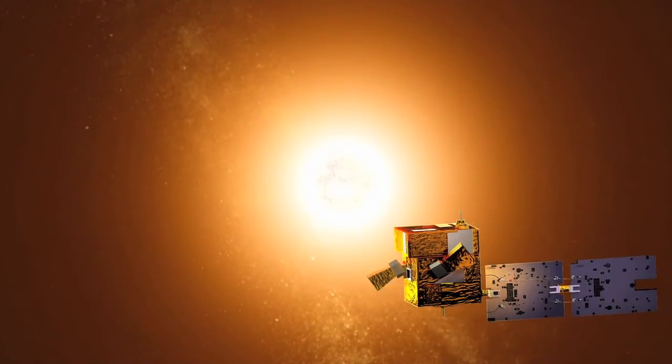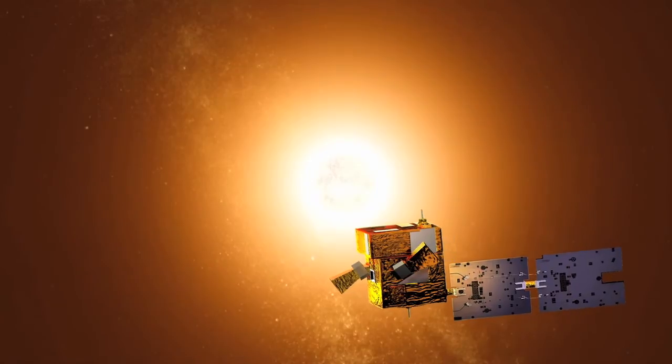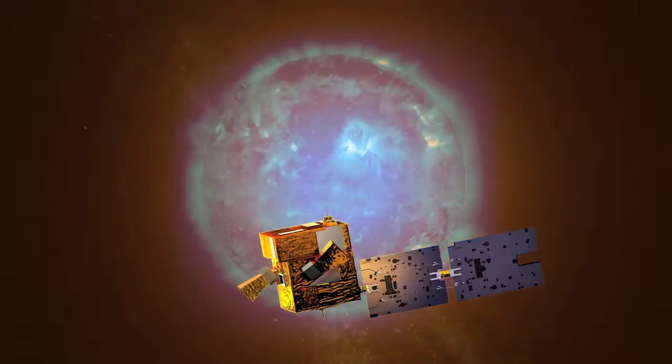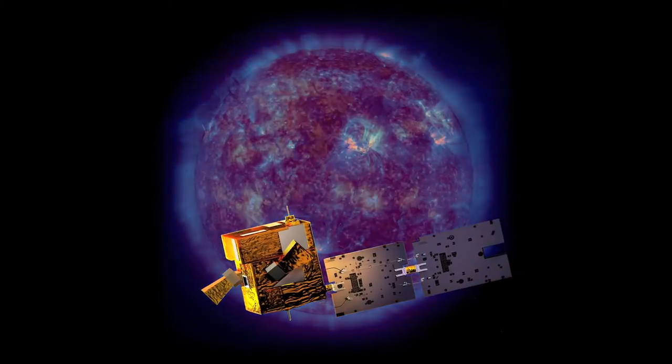Detecting this solar oblateness has been possible, amongst others, with the Picard satellite and its ingenious SODISM telescope, which observed the Sun from mid-wave ultraviolets to near-infrared.